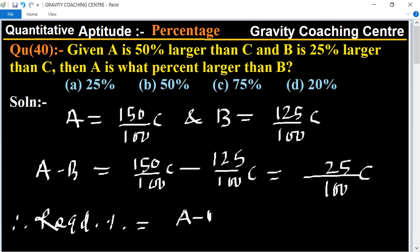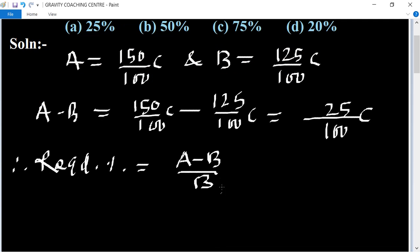A minus B upon B. Since we need to find what percent A is larger than B, the difference A minus B, which is 25 upon 100 C, is divided by...